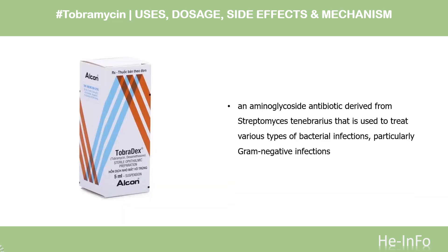Tobramycin is an aminoglycoside antibiotic derived from Streptomyces tenebrarius that is used to treat various types of bacterial infections, particularly gram-negative infections. It is especially effective against species of Pseudomonas. It was patented in 1965 and approved for medical use in 1974, and it is on the World Health Organization's list of essential medicines.